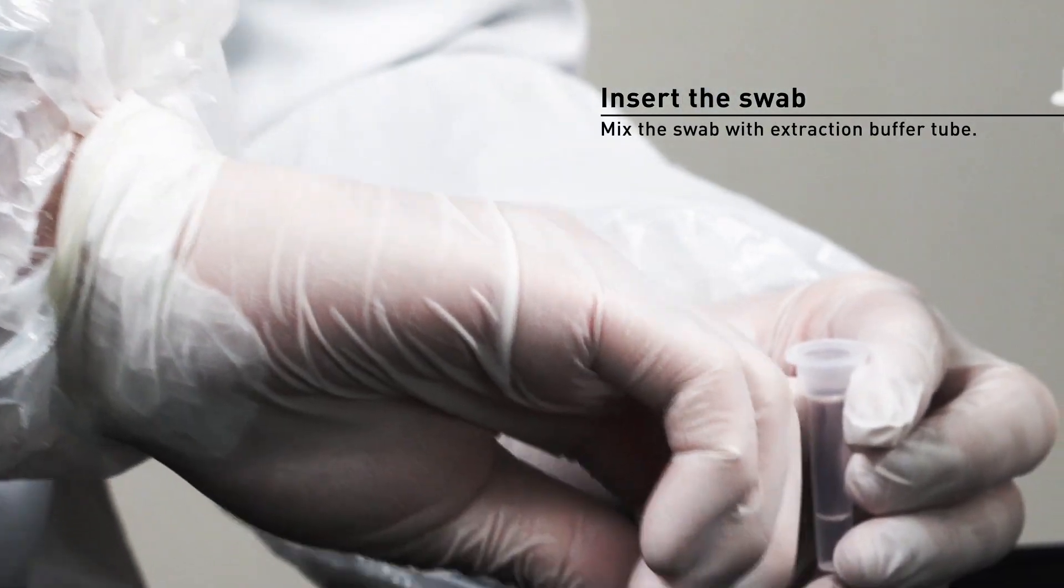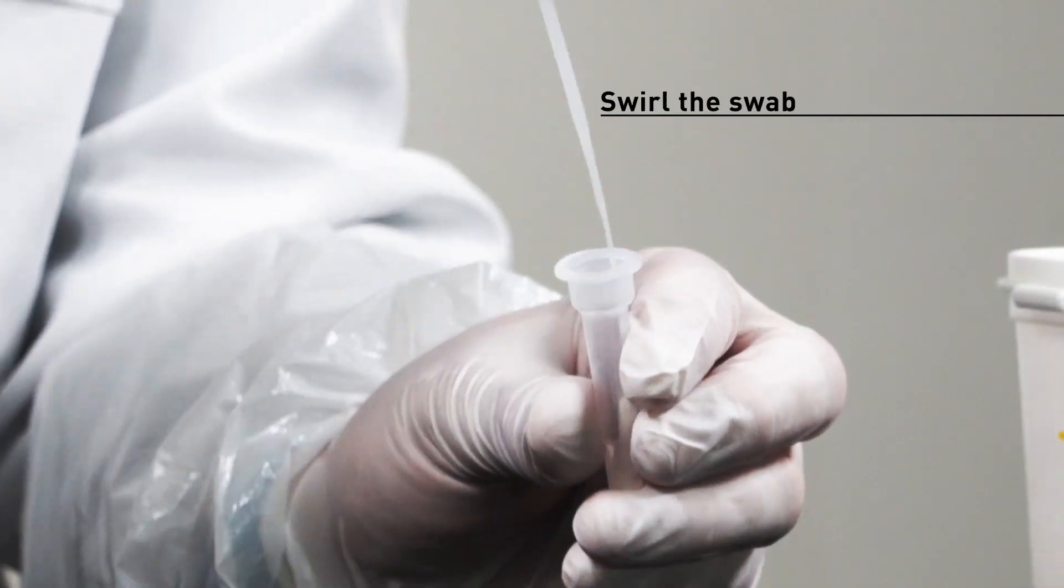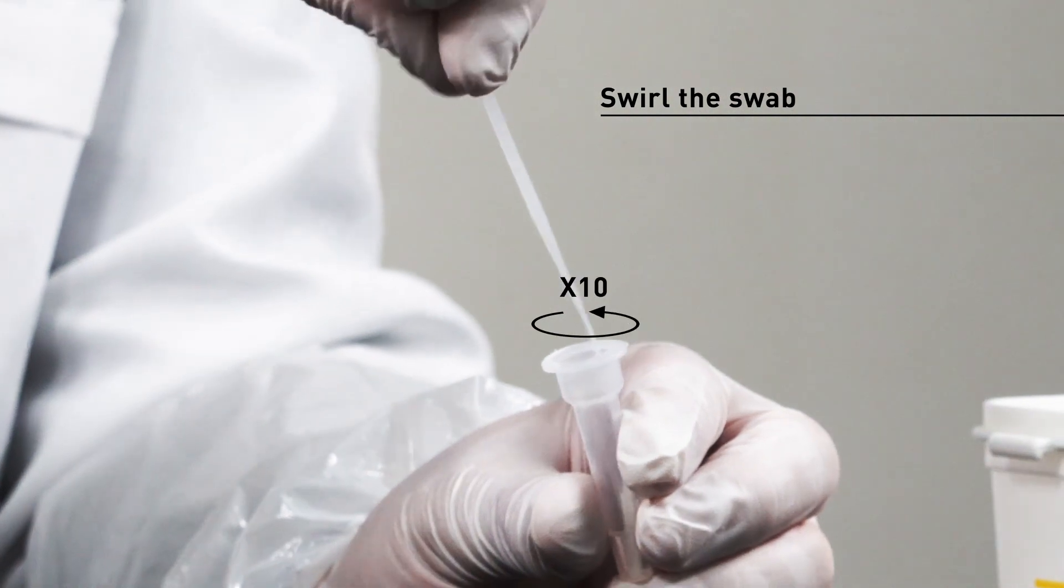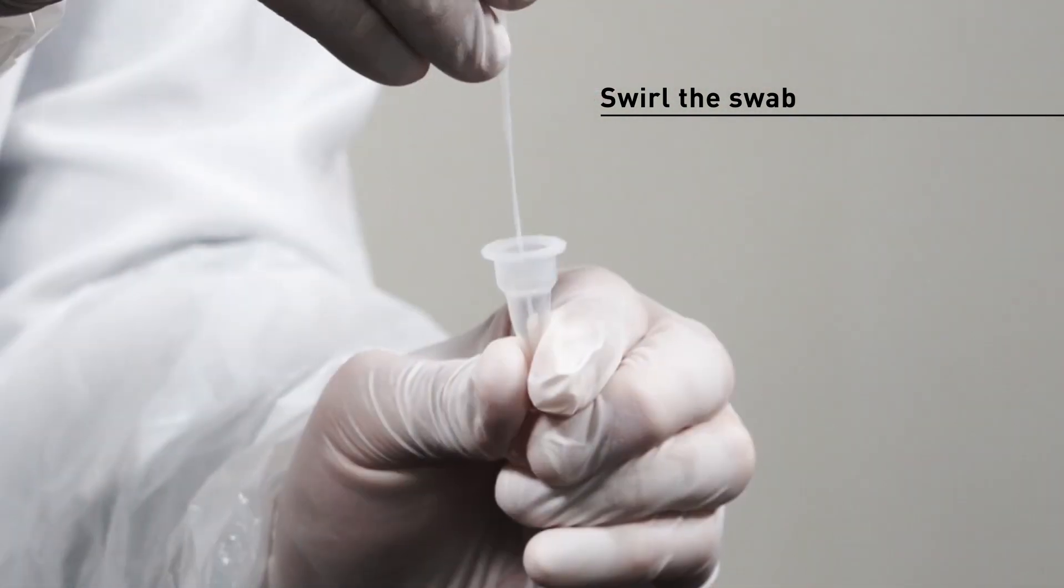Insert the swab into the extraction buffer tube containing the sample extract. Place the swab on the wall of the extraction buffer tube and swirl it at least 10 times so that the sample is extracted.